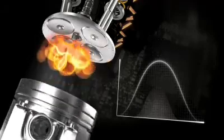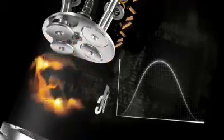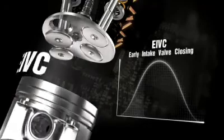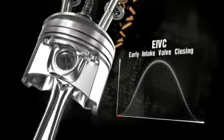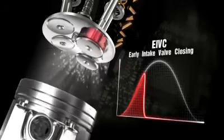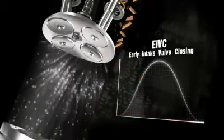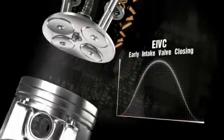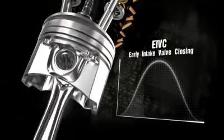At medium-low RPM torques and engine partial load, EIVC, early intake valve closing, optimizes volume efficiency and reduces pumping losses. Undesired back flow into the manifold is avoided, and air mass trapped in the cylinder optimized.